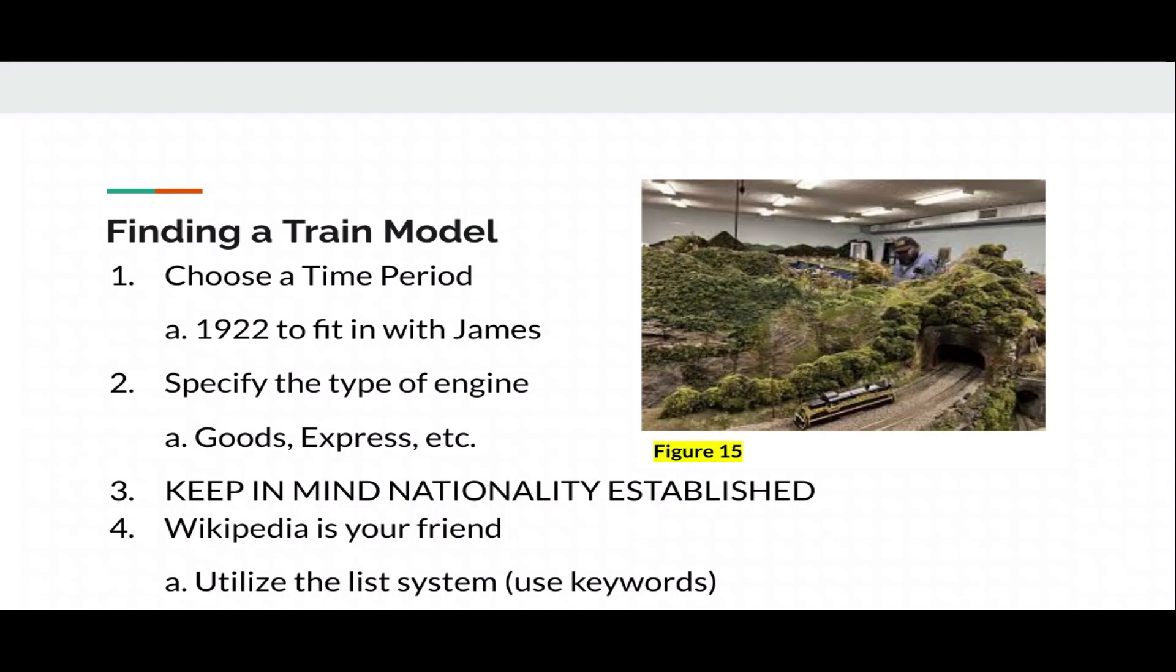Chapter 2, adding the sauce. So for me, Thomas and Friends, you gotta get a character. So first, I have to think of a time period. I chose like 1922-ish to fit in with James, because that's when he was created and he came around. If you check on his wiki, it's 1911 to 1922, but I chose 1922. Specify type of engine. Goods, express, etc. And keep in mind nationality. Because you want to go on the wiki. I recommend Wikipedia. You do a list them, because they have a whole list. And use keywords. Search up your exact, and yeah. You got to find exact region, exact area. See a general thing and play around. See what works.